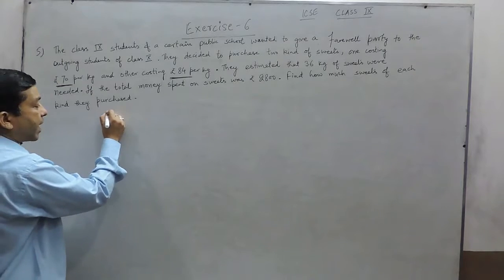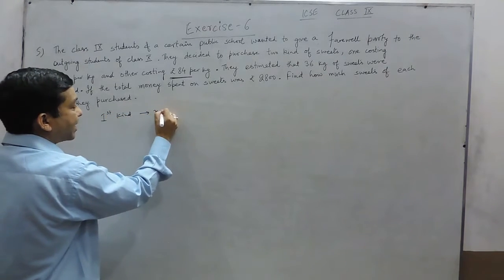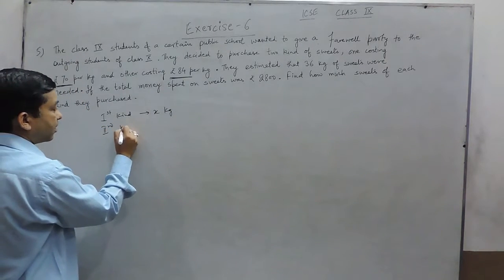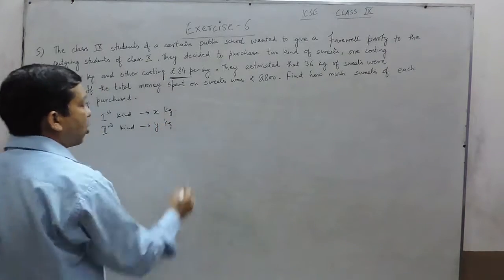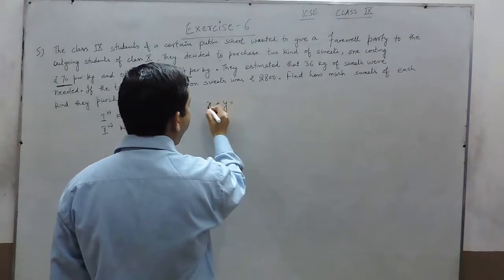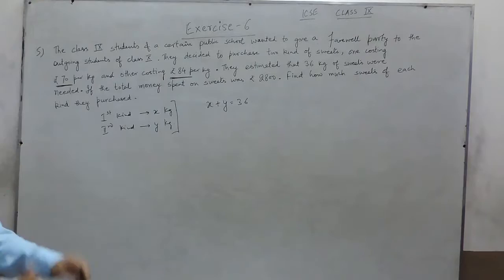Now, suppose the first kind of sweets is x kg which they have purchased and the second kind of sweets is y kg which they have purchased. So, here we can come to the equation x plus y equals 36 because they are purchasing total 36 kg of sweets.